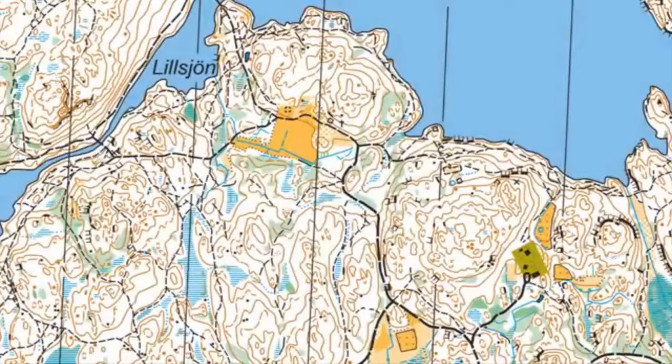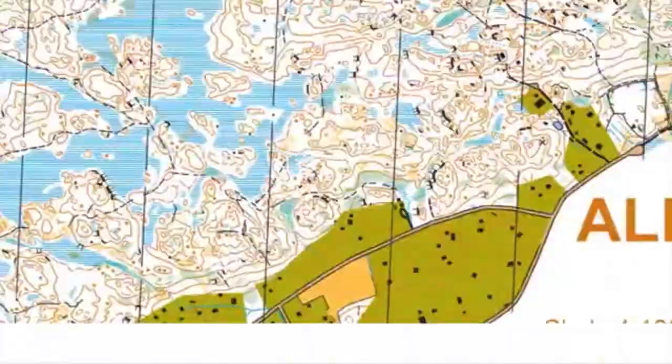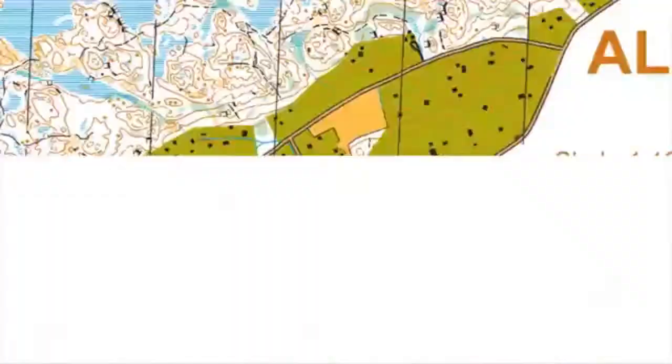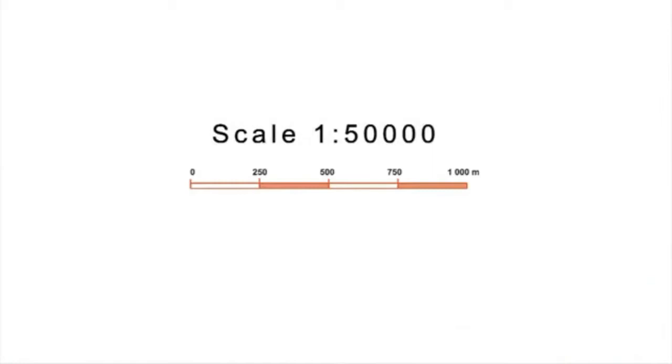How do you measure a distance through a map? If the scale is a verbal statement — one inch is equal to one mile — determine the distance by simply measuring it with a ruler. One inch is equivalent to one mile, so for every inch between two points on the map, the real distance on the ground is one mile.